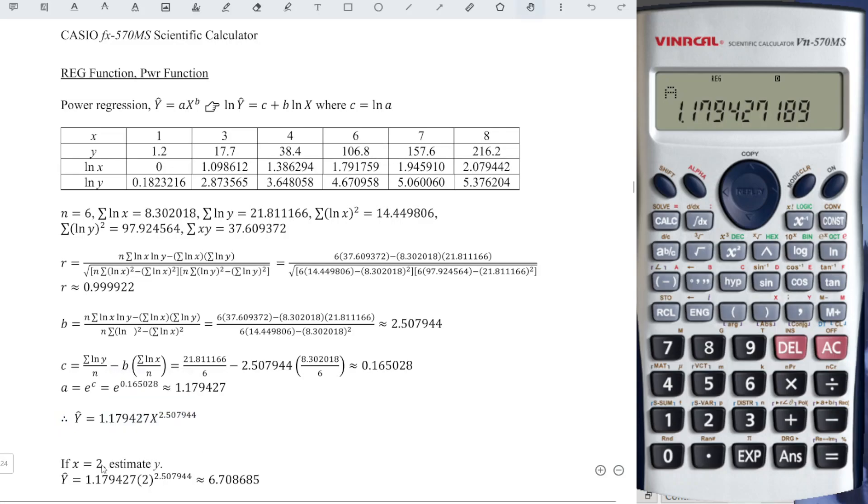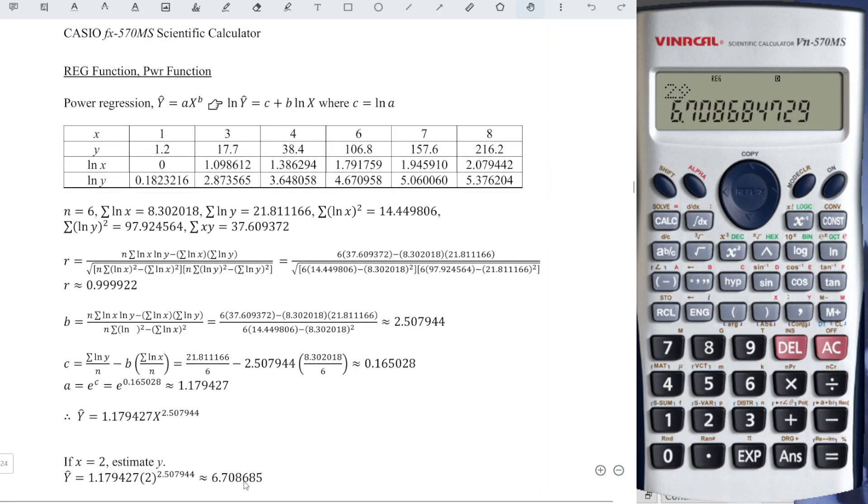Now, lastly, the question asks us to estimate the value of Y given an X value. We just have to press the value that we are given, 2, and we press shift 2. We look for Y estimate. So press right, right, right, until we see Y estimate, which is number 2. We press equal, then we will obtain the correct value.